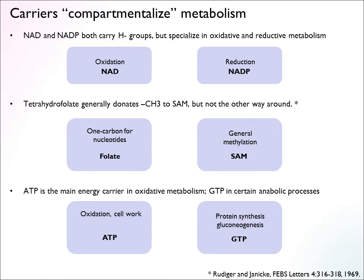ATP and GTP represent another interesting compartmentalization. ATP is a major energy carrier used in most oxidative metabolism and the reactions that carry out work in the cell. But GTP is also an important energy carrier — it is used quite a bit in protein synthesis, carrying energy for that major cellular process, and also in gluconeogenesis and a couple of other anabolic processes. Again, we have two carriers that specialize in different processes, which allows the cell to separate and independently control different parts of metabolism.